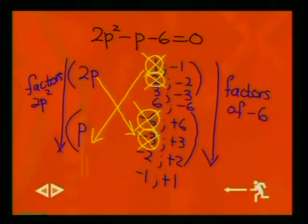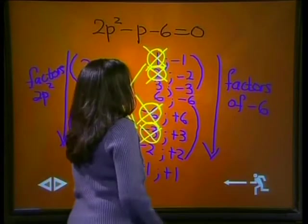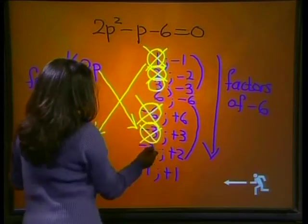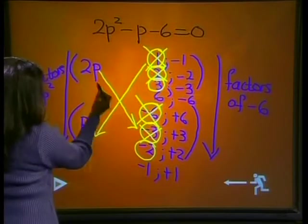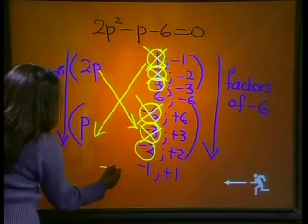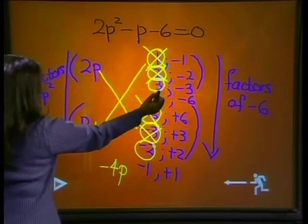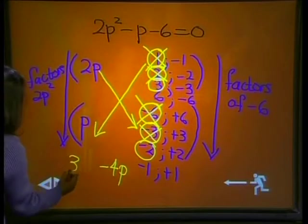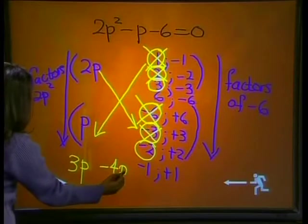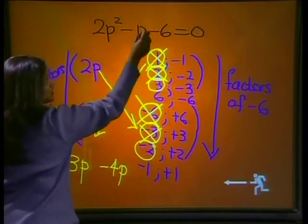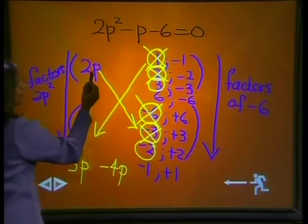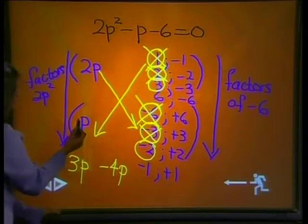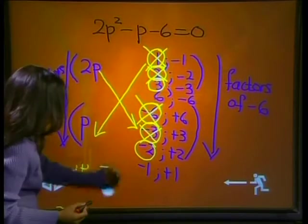Without writing down all the possibilities you can try them out in your head. You should get to the one that works. So let's try our next set of factors: 3 and -2. If we multiply out 2p × -2 gives me -4p. 3 × p gives me 3p. 3p - 4p gives me -1p which is the middle term. So our factors 2p + 3 and p - 2 are correct. Let's write that down.